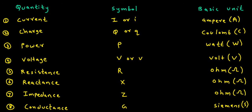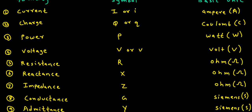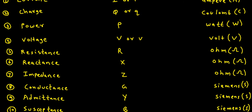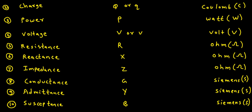Quantity: Voltage. Symbol: capital V or small v. Basic Unit is Volt, denoted by capital V. Quantity: Resistance. Symbol: capital R. Basic Unit is Ohm, denoted by Omega. Quantity: Reactance. Symbol: capital X. Basic Unit is Ohm, denoted by Omega. Quantity: Impedance. Symbol: capital Z. Basic Unit is Ohm, denoted by Omega.